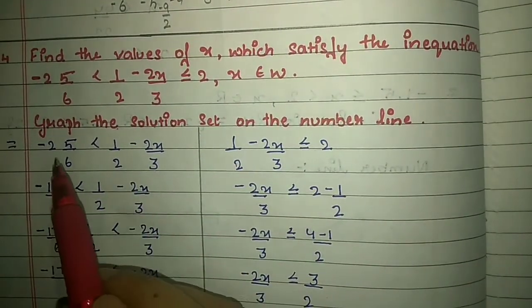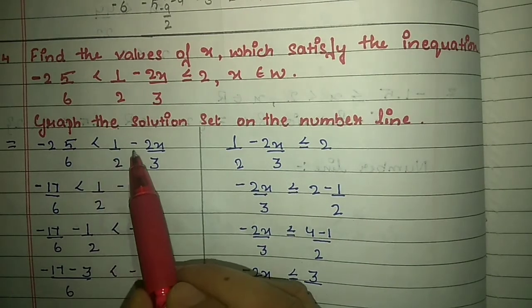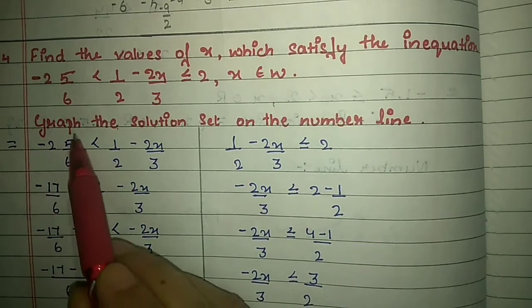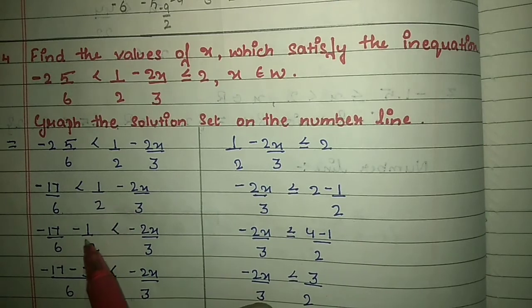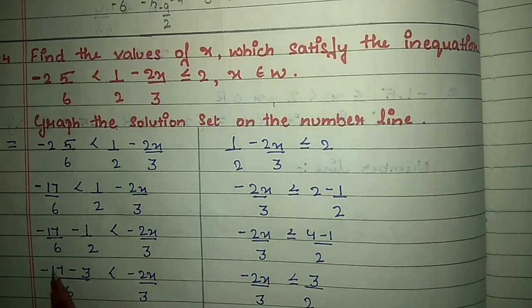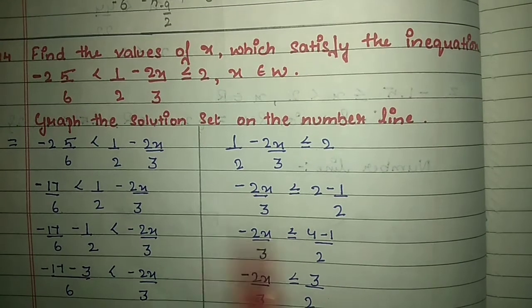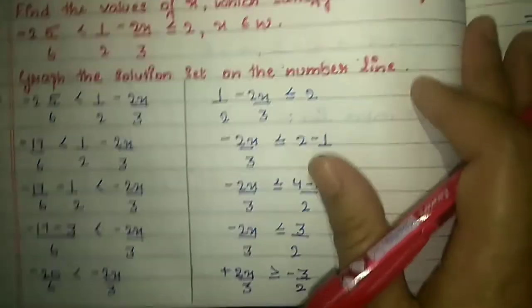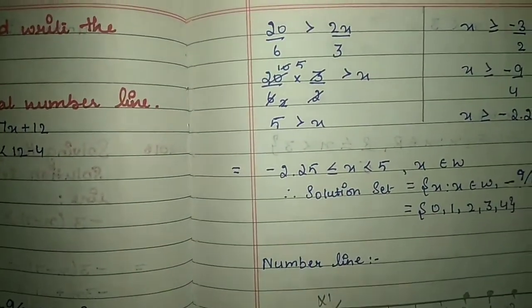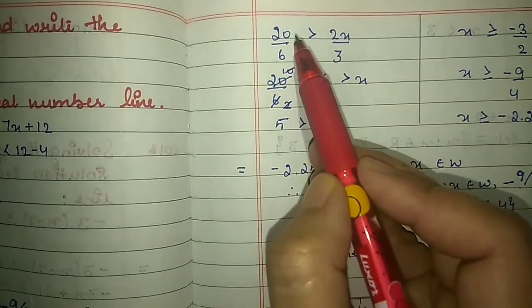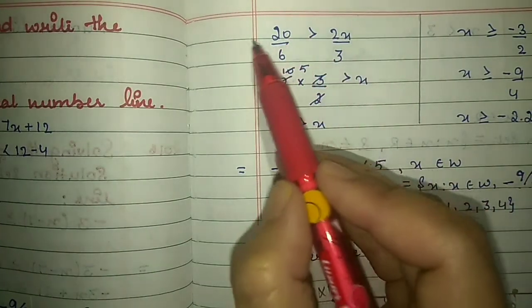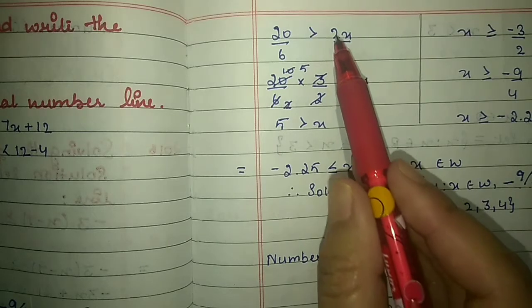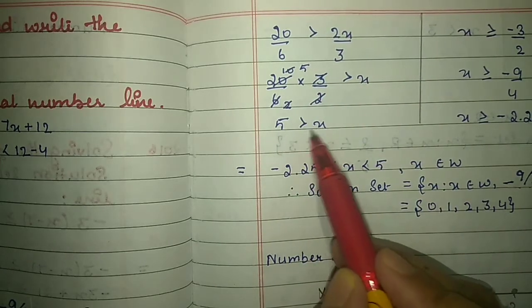Take the first half: minus 2 and 5/6 < 1/2 minus 2x/3. Convert to improper fraction: minus 17/6. Shift 1/2 to the left, take LCM, giving minus 17/6 minus 3/6 = minus 20/6 < minus 2x/3. Shifting the minus reverses the inequality, giving minus 20/6 > 2x/3. Shift 2/3 across, so 5 > x.